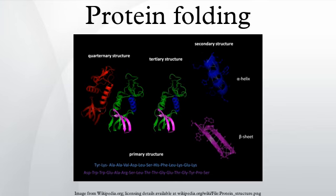Under certain conditions some proteins can refold; however, in many cases denaturation is irreversible. Cells sometimes protect their proteins against the denaturing influence of heat with enzymes known as chaperones or heat shock proteins, which assist other proteins both in folding and in remaining folded. Some proteins never fold in cells at all except with the assistance of chaperone molecules, which either isolate individual proteins so that their folding is not interrupted by interactions with other proteins, or help to unfold misfolded proteins, giving them a second chance to refold properly. This function is crucial to prevent the risk of precipitation into insoluble amorphous aggregates.